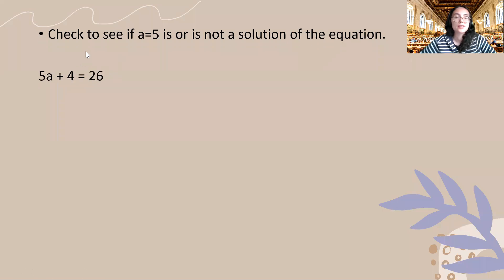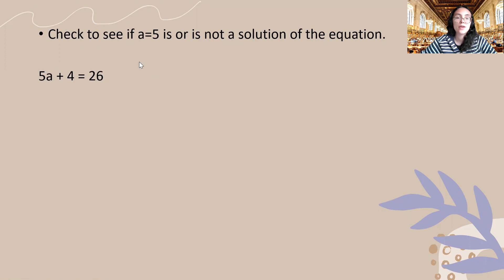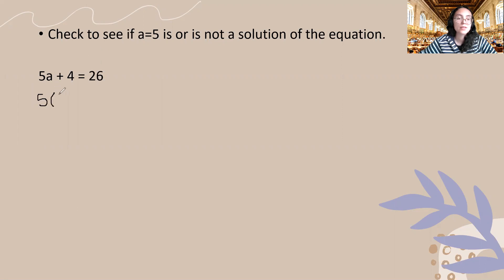We are asked to check to see if a is equal to five is or is not a solution of the equation 5a plus 4 is equal to 26. So again I'm going to substitute 5 wherever I see a for this equation. I'll carry out the addition and multiplication and then check to see if the left hand side is equal to the right hand side. So we're going to substitute first — I see an a here and we're told a is equal to 5, so I'm going to substitute 5.